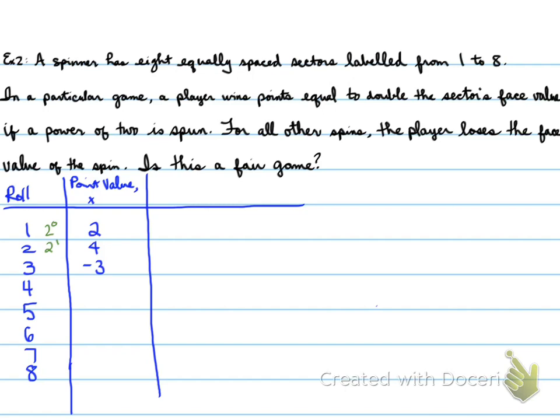Four is a power of two, so two to the power of two is four. Therefore, we double four, and that gives us eight. Five is not a power of two, so we lose five points. Six is not a power of two, so we lose six points. Seven is not a power of two, so we lose seven points. But eight is a power of two, because two to the power of three gives you eight. Therefore, we get sixteen points. So that's the point value.